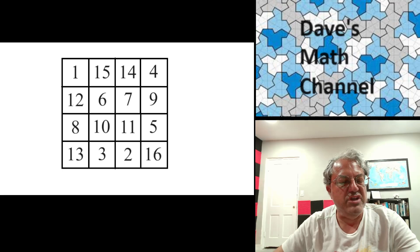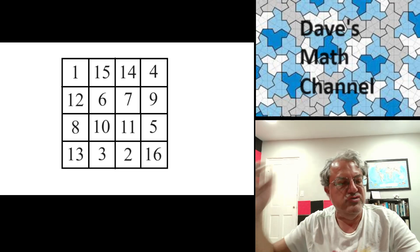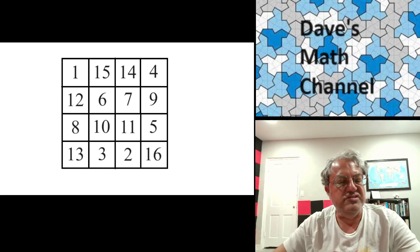Not only is it a magic square where all the rows, columns, and diagonals add up to the magic constant of 34—you can check that.